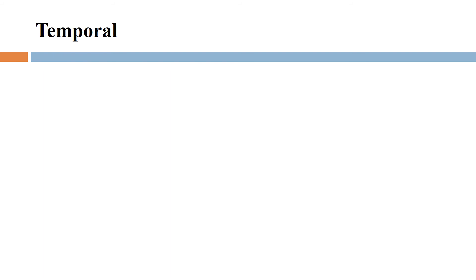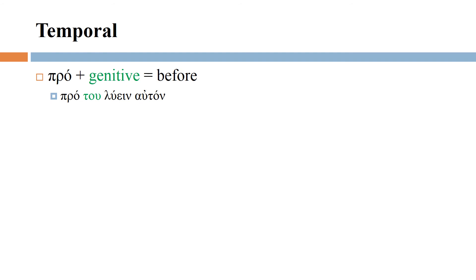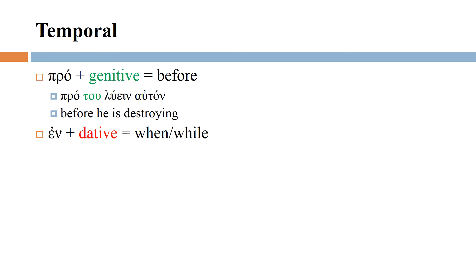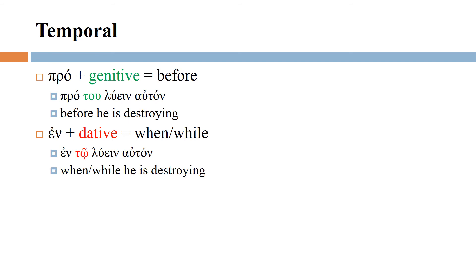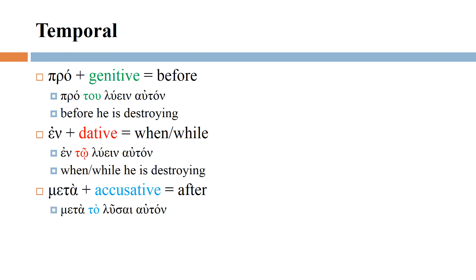The temporal use of the articular infinitive: pro plus the genitive means 'before,' so pro tou luein auton means 'before he is destroying.' En plus the dative means 'when' or 'while,' and the article takes the dative — en tō luein auton means 'when/while he is destroying.' Meta plus the accusative means 'after,' so meta to lusai auton means 'after he destroys.'